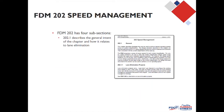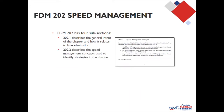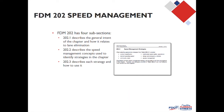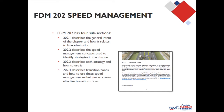This chapter has four subsections. The first describes the general intent of the chapter and how it relates to the concept of lane elimination or a road diet. The second describes the speed management concepts used to provide the strategies. The third describes each strategy and how to use them. The final section describes transition zones and how to use these techniques to effectively create transitions between different context classifications and between different speeds within a classification.